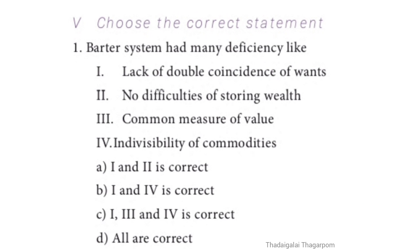Section 5: Choose the correct statement. Barter system had many deficiencies like: 1. Lack of double coincidence of wants, 2. No difficulties of storing wealth, 3. Common measure of value, 4. Indivisibility of commodities. The correct answer is C option: 1, 3, and 4 are correct.